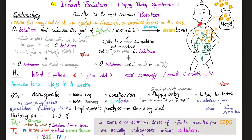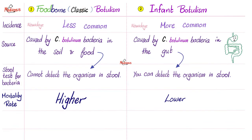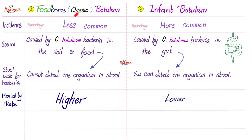Comparing classic botulism and infant botulism: infant botulism is more common nowadays. Both are caused by Clostridium botulinum. In adults, the organism came from food ingestion or soil. In infants, it lives in the gut because there is no competition — the spores were in the honey, but the bacteria are in the gut and can be found in the stool. In adults, because they are outcompeted by other bacteria, the organism usually cannot be detected in stool. Mortality rate is higher in foodborne botulism than in infant botulism.